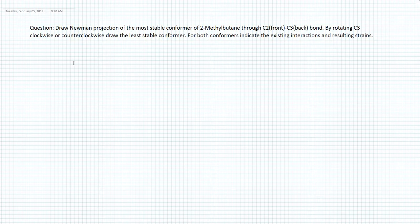In this tutorial we are going to solve a question to practice drawing Newman projections. The question asks: draw the Newman projection of the most stable conformer of 2-methylbutane through C2 as the front carbon and C3 as the back carbon. By rotating C3 clockwise or counterclockwise, draw the least stable conformer. For both conformers, indicate the existing interactions and resulting strains.